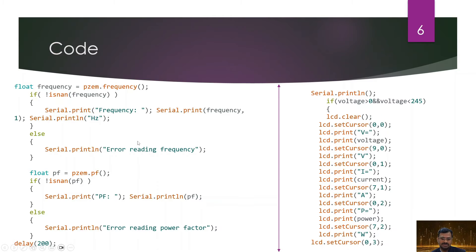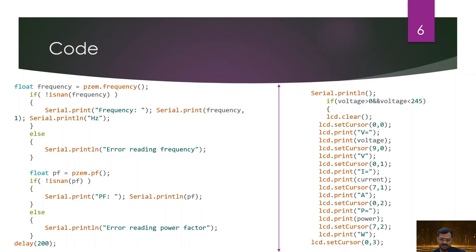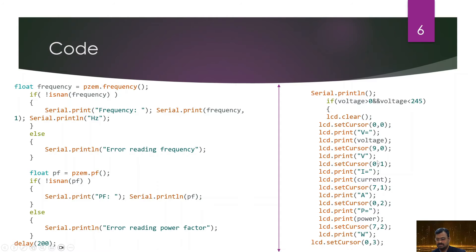Once you have all these data values, you can decide which ones to display on the LCD, and also decide what kind of protection to implement — whether over current, over voltage, frequency protection, or power factor trip. This same meter can be used for all types of protection. Using only one relay, you can conditionally turn on or turn off the device, and the trip reason will also be displayed on the LCD so you understand why the circuit opened.